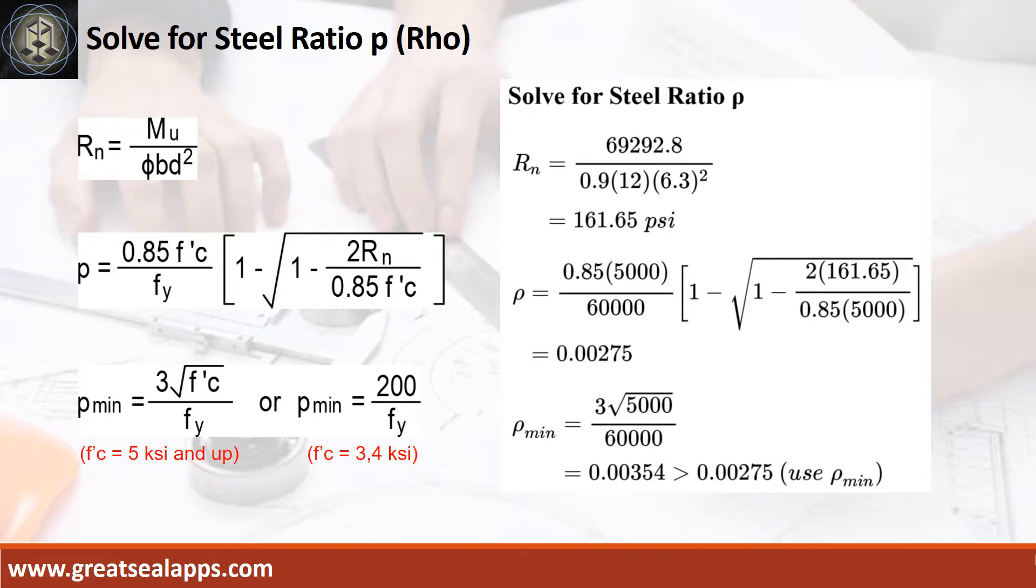Given maximum moment equals 69,292.8 inch pounds, resistance factor equals 0.9, B equals 12 inches, and D equals 6.3 inches. The beam design ratio RN equals 161.65 psi, and reinforcement ratio RAW equals 0.00275. Use RAW minimum of 0.00354.